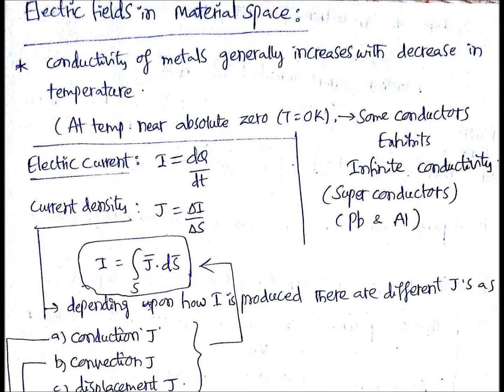Current density is different depending upon how current is going to be produced in different materials — like conduction current density, convection current density, and displacement current density. We are going to see the characteristics of conduction and convection current density.